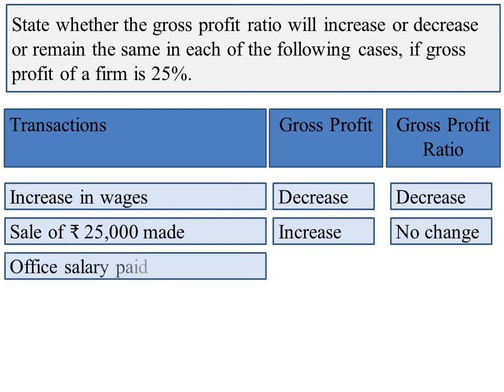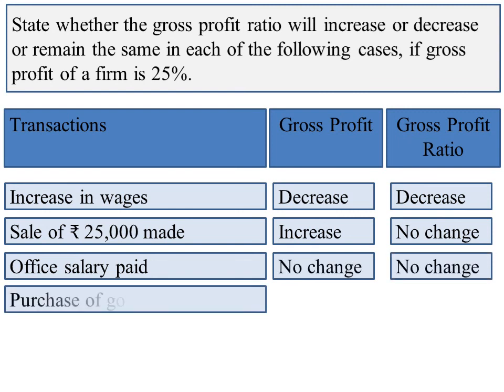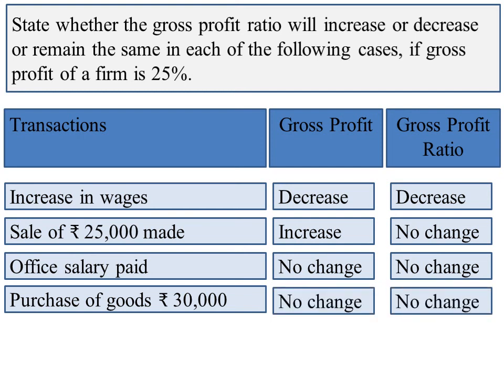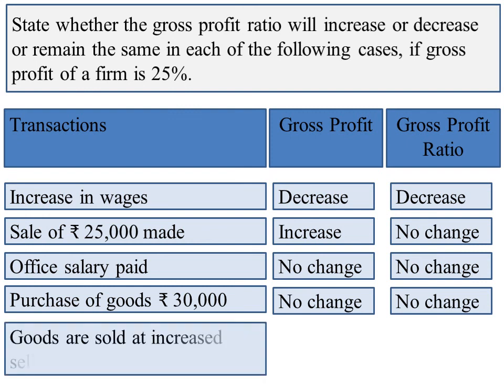Next transaction: office salary paid. Office salary is an indirect expense; it is not part of cost of goods sold. Therefore, there would not be any change in gross profit ratio. Next: purchase of goods rupees 30,000. Here the amount of purchases and the amount of closing stock will increase by rupees 30,000. Therefore, there would not be any change in cost of goods sold, and gross profit will remain the same. Next transaction: goods are sold at an increased selling price. Here, because of the increase in selling price, sales value will increase, and therefore gross profit will also increase.